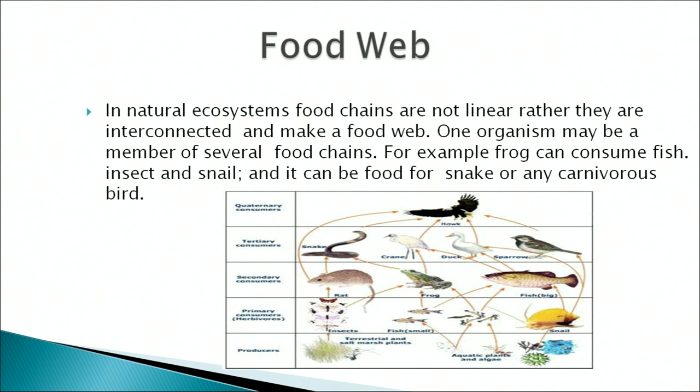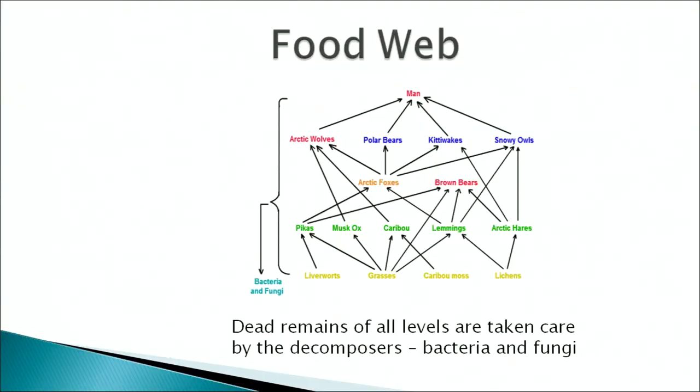In natural ecosystems, food chains are never linear; they are interconnected and form a food web. One organism may be a member of several food chains — for example, a frog can consume fish, insects, and snails and can itself be food for a snake or carnivorous bird. In an aquatic ecosystem, phytoplanktons are the main producers, zooplanktons are first-level consumers, and large fishes and shore birds feed at higher levels. Dead remains at all levels are processed by decomposers such as bacteria and fungi, which recycle nutrients back into the substrate.